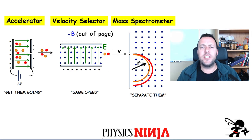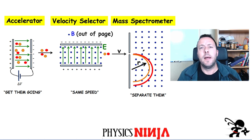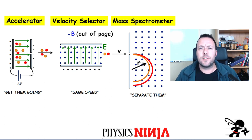Hi everybody, PhysicsNinja here. Today we're going to look at a mass spectrometer problem. A mass spectrometer typically consists of three parts.